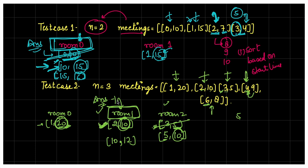So the three key points to keep in mind: first, a meeting will always take place in the lowest room number available. Second, if no room is available, the meeting gets delayed but duration stays the same. Third, when a room becomes free, the meeting with the earlier original start time gets the room first. These are the three constraints from the problem.